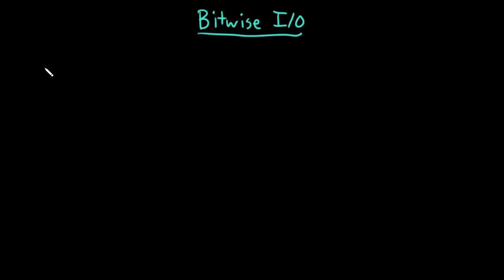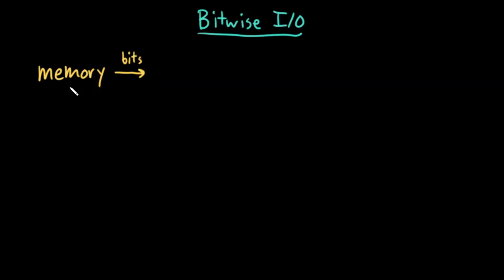Let's say I'm trying to write to disk — I want to write bit by bit to disk. In memory, I have something that I want to write. So normally with bytewise I/O, from my program's memory, I would write bytes to the output stream, the output stream would store those bytes in a bytewise buffer, and then it would write to disk once that buffer is full.